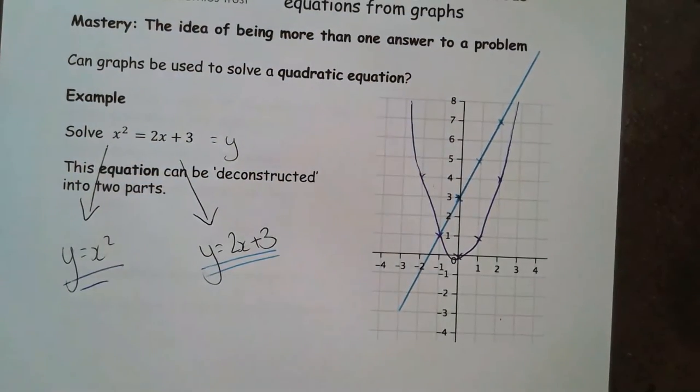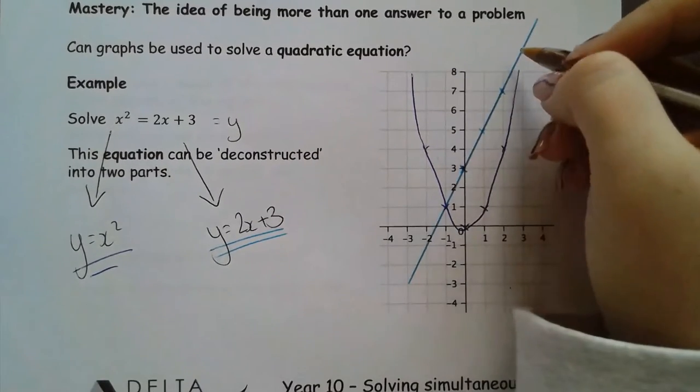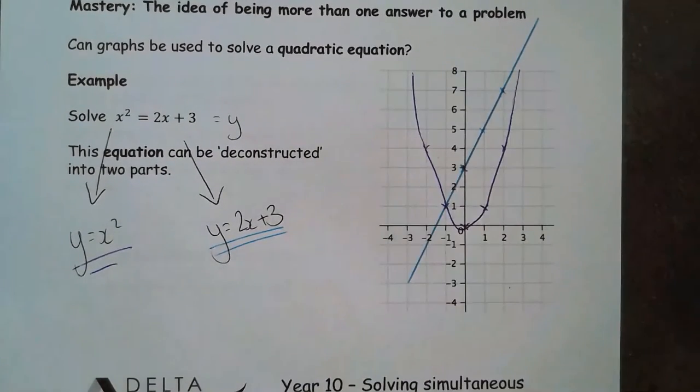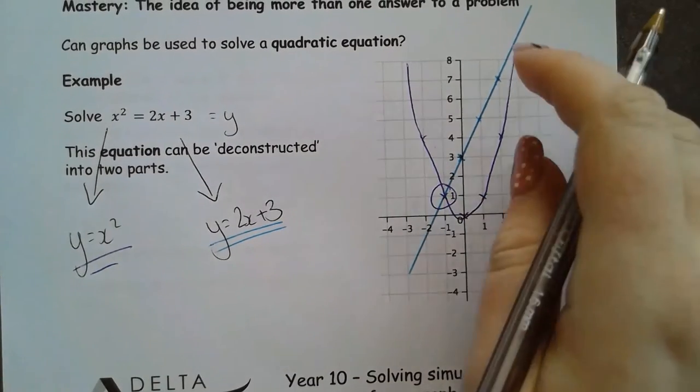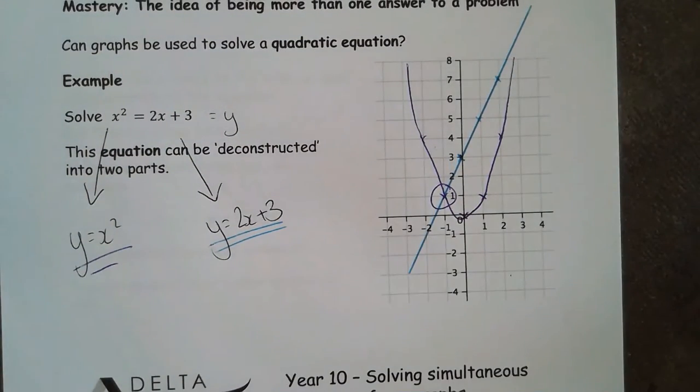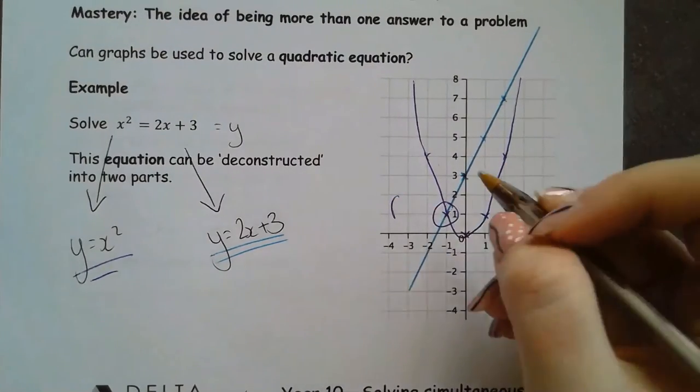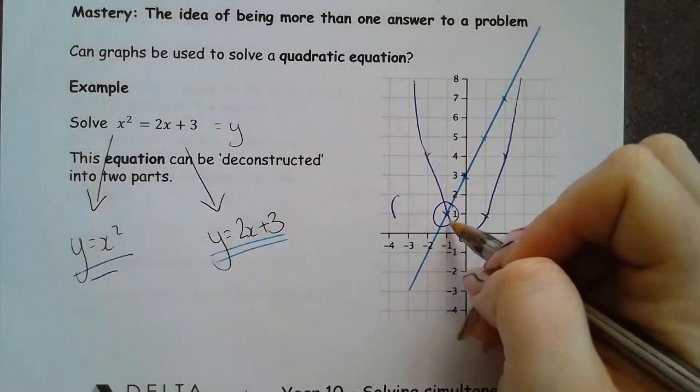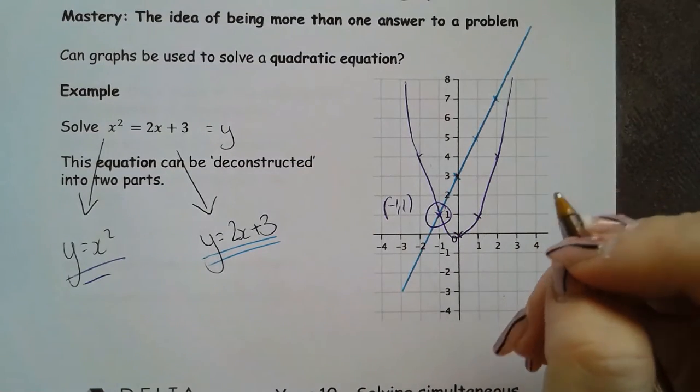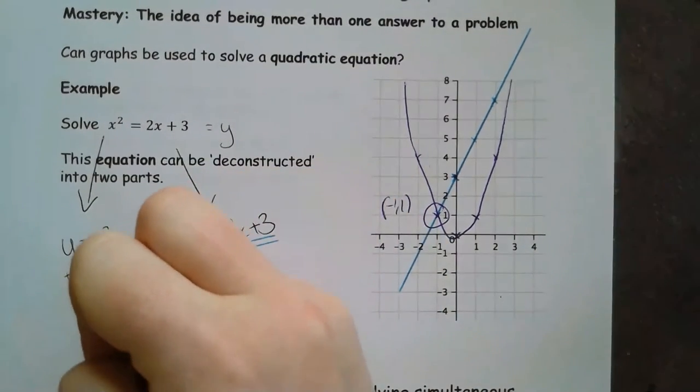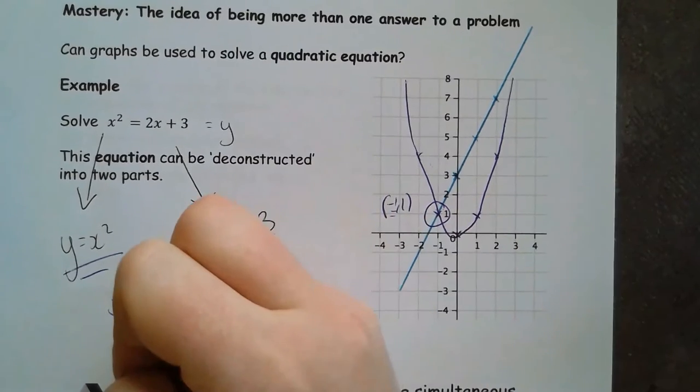We've actually got a little bit of a problem this time in that we can only see one of these intersections with the scale that we've been given. So one of these crosses at negative 1, 1. So I've got one solution, which is x is negative 1.